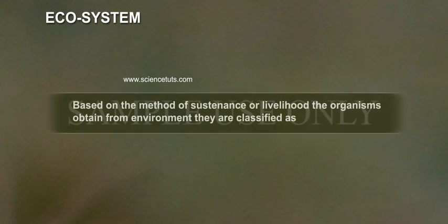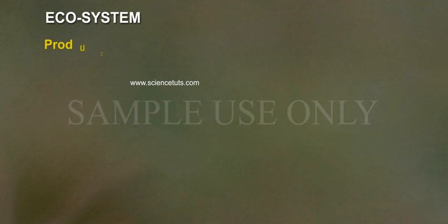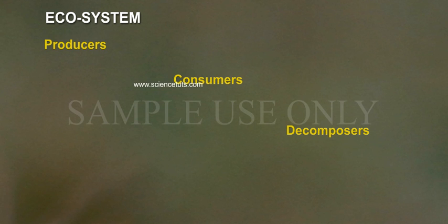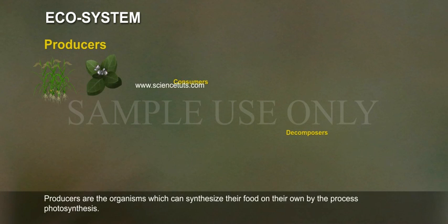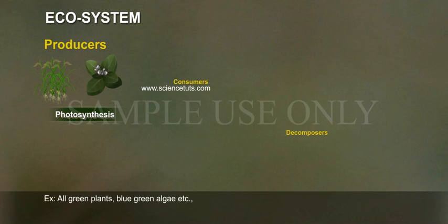In our earlier class, we have learned that based on the method of sustenance or livelihood the organisms obtain from the environment, they are classified as producers, consumers and decomposers. Producers are the organisms which can synthesize their food on their own by the process of photosynthesis. Examples include all green plants and blue-green algae.